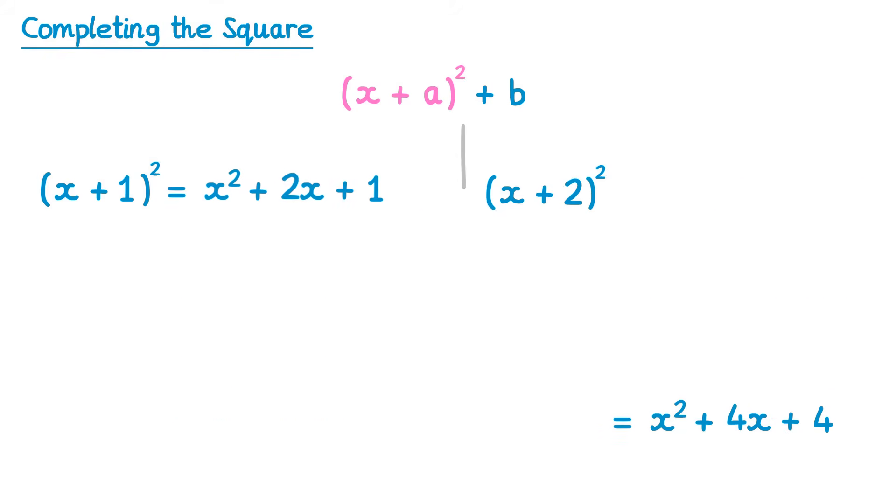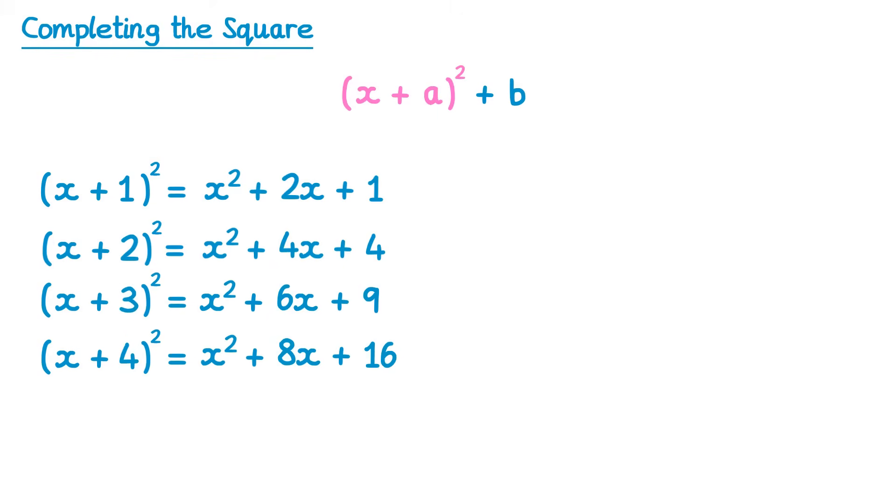Now we can see a pattern if we continue this sequence. So let's look next at x plus 3 all squared. That comes out as x squared plus 6x plus 9 and x plus 4 all squared. x squared plus 8x plus 16.